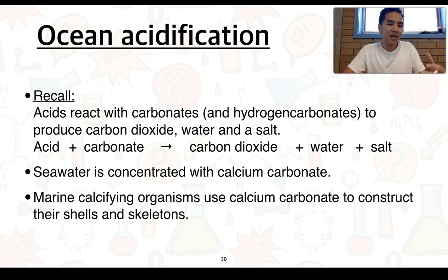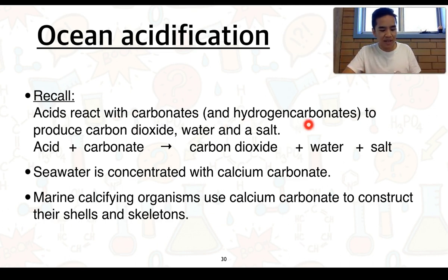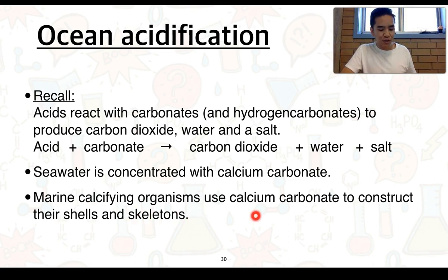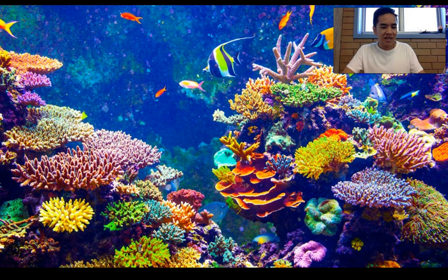Recalling from Stage 1 chemistry, we know that acids react with various substances such as carbonates and hydrogen carbonates, producing carbon dioxide, water, and salt — as shown in the general word equation. Seawater is generally concentrated with calcium carbonate and is mildly alkaline, with a pH of roughly 8.4. Marine calcifying organisms use this calcium carbonate to construct their shells and skeletons. These organisms include coral, crustaceans, and mollusks — representing a massive component of many aquatic ecosystems.